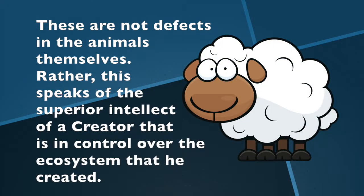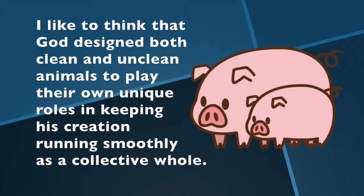This speaks of the superior intellect of a Creator who is in control over the ecosystem he created. He created all living things to work together, to function with one another. God designed both clean and unclean animals to play their own unique roles in keeping his creation running smoothly as a collective whole.